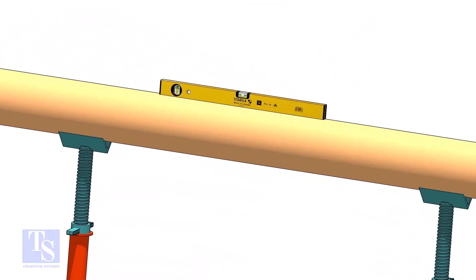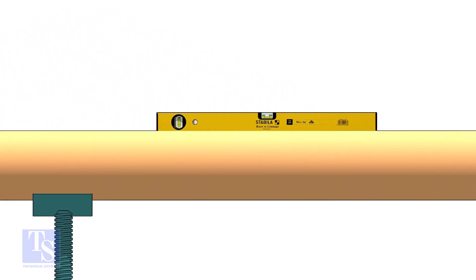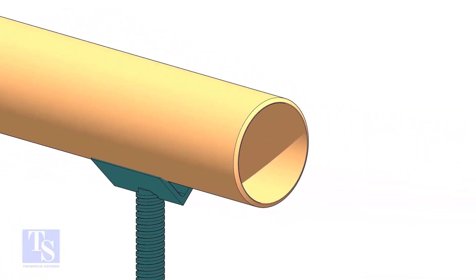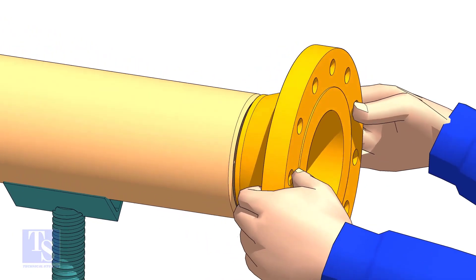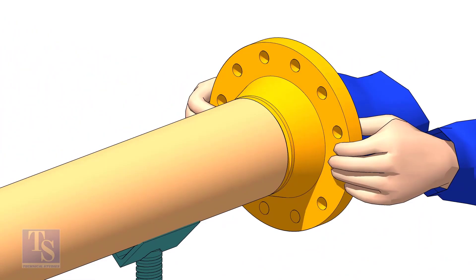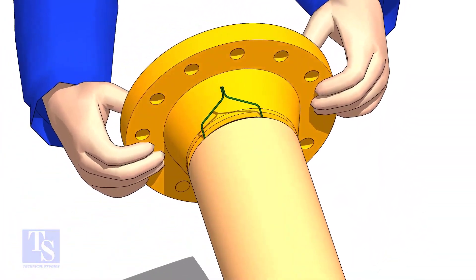Level the pipe. Hold the flange on the pipe face as shown. Put the gap rod in the joint. Look through the flange and the pipe, and adjust the overlap.